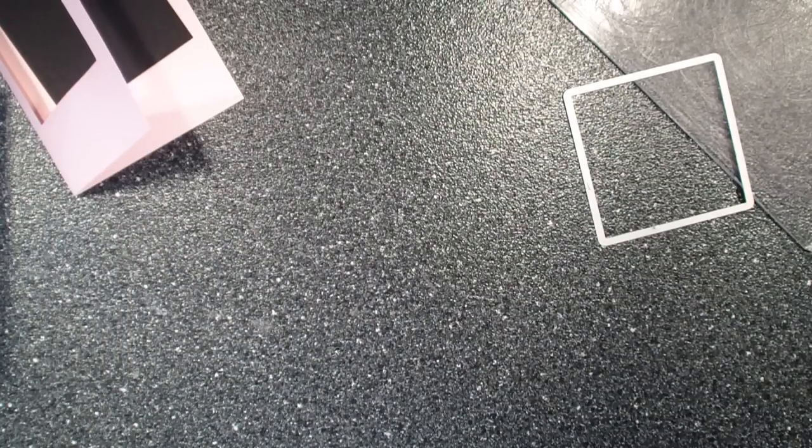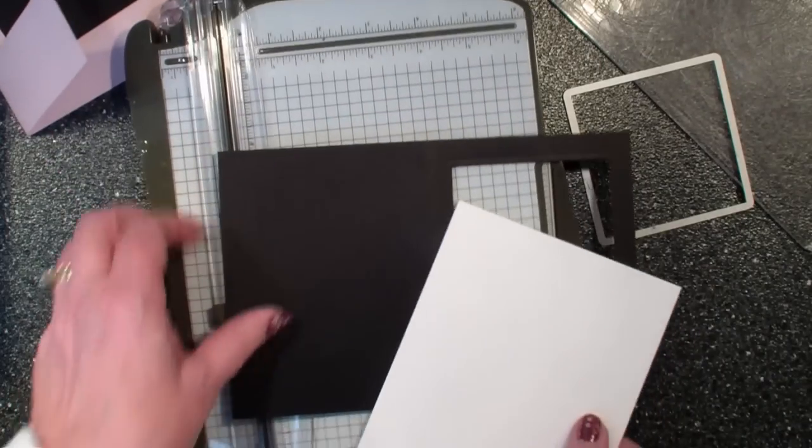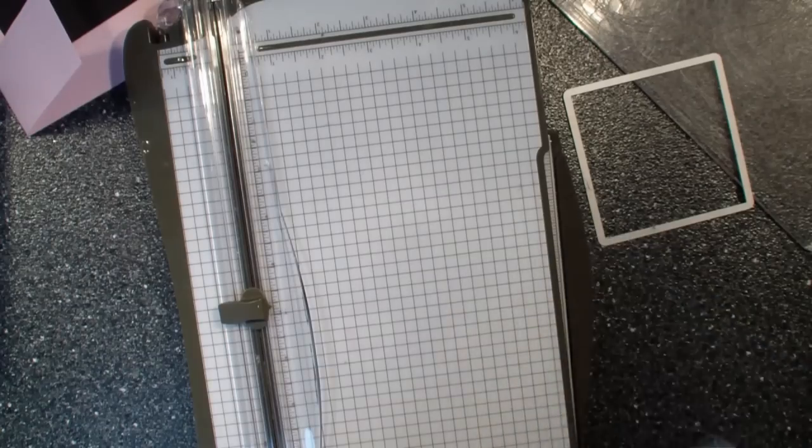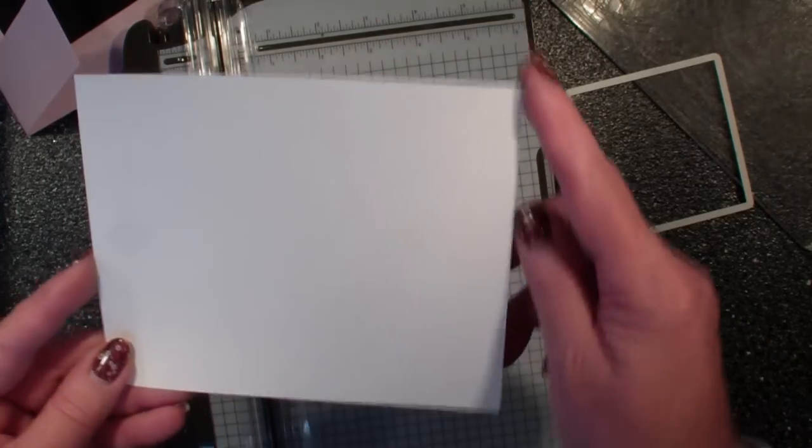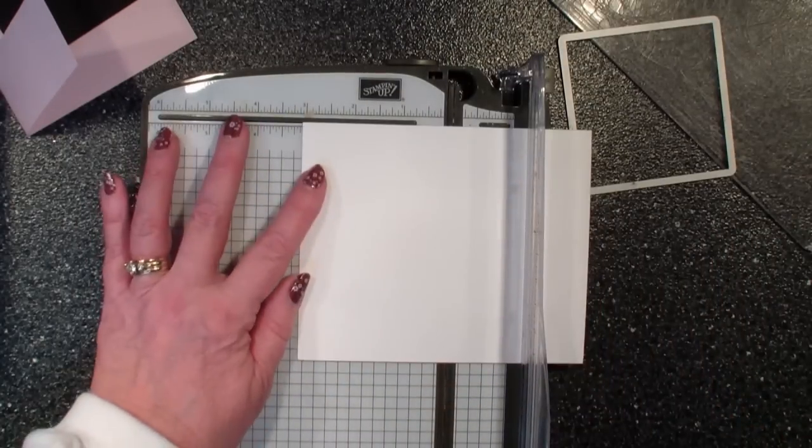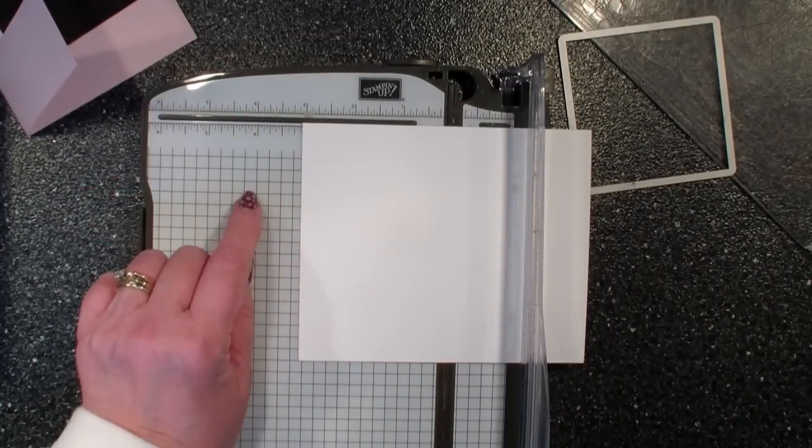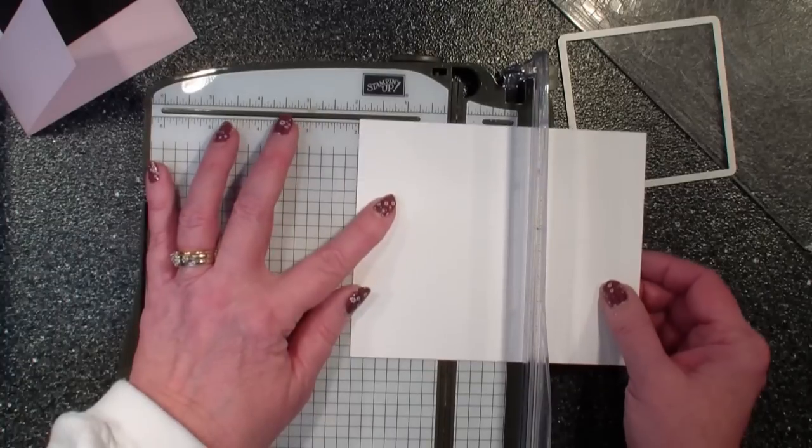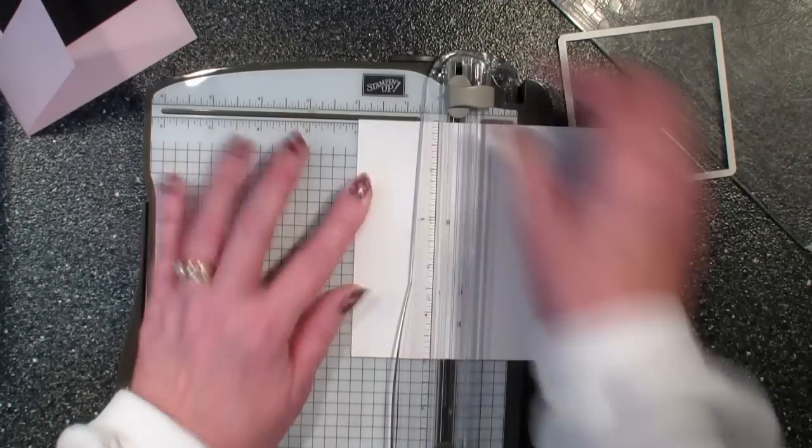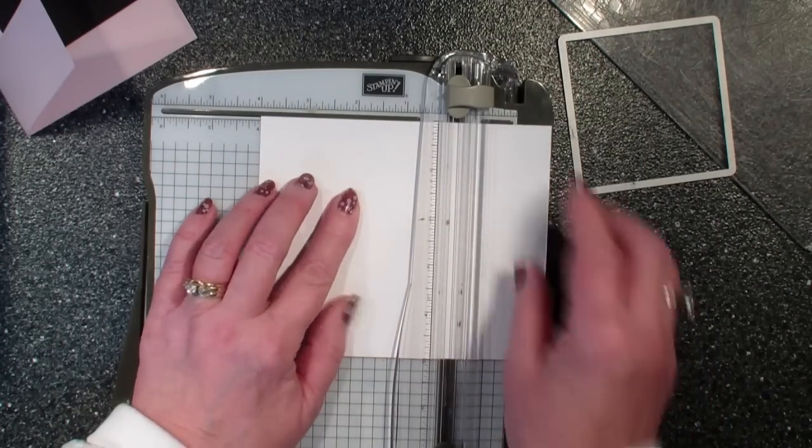Next what I'm going to do is bring in my personal trimmer. I have a piece of whisper white card stock. This measures five inches by six inches and I want to put the six inch side up at the top of my trimmer and I am going to score it at the two inch and the four inch.